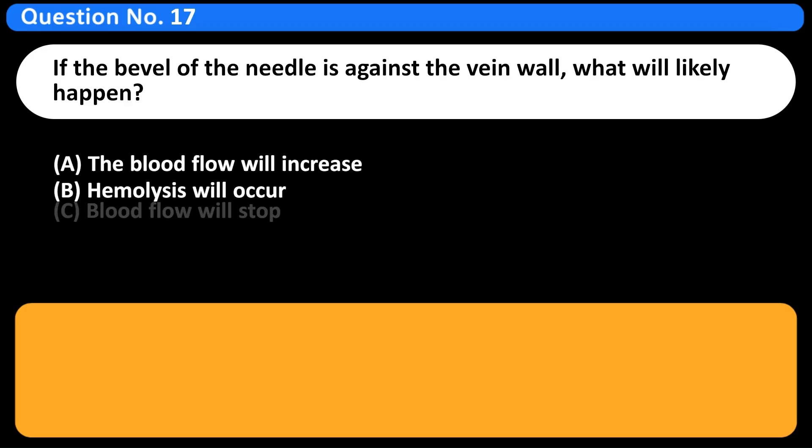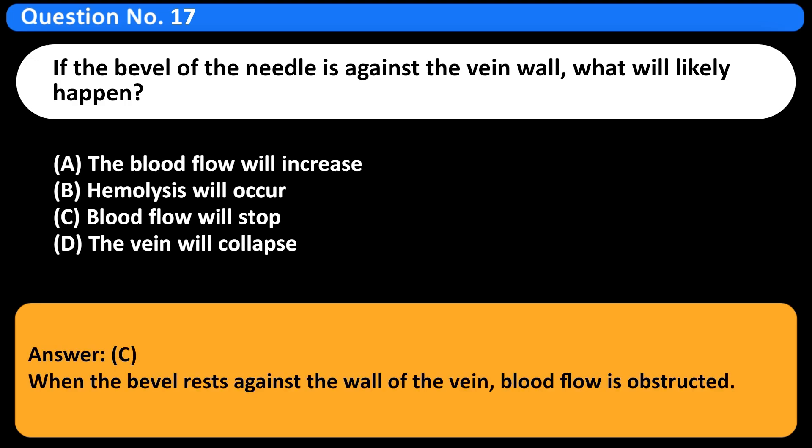If the bevel of the needle is against the vein wall, what will likely happen? A. The blood flow will increase. B. Hemolysis will occur. C. Blood flow will stop. D. The vein will collapse. Answer C. When the bevel rests against the wall of the vein, blood flow is obstructed.